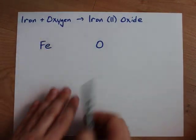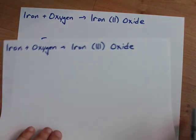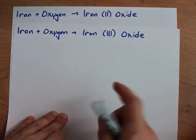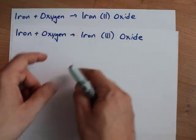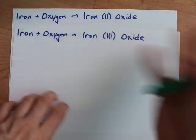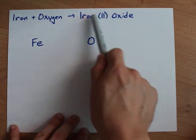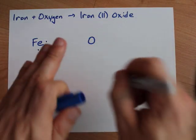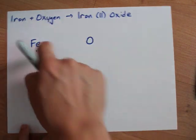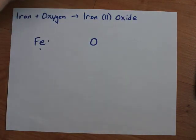One more thing: if you have a transition metal like iron, they generally have to tell you what charge the iron is going to take, because iron can be iron(II) oxide or iron(III) oxide depending on the electron configuration. It's not always predictable. The key point is they have to tell you which valence to use. Iron(II) means iron brings two valence electrons; iron(III) means iron brings three valence electrons.